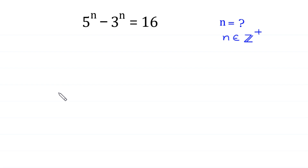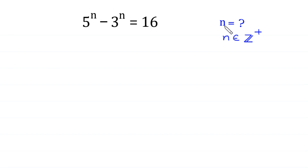Welcome to how to solve this very nice exponential equation: 5 to the power n minus 3 to the power n is equal to 16. We need to find all possible values of n where n is a positive integer.